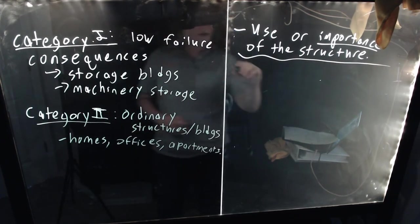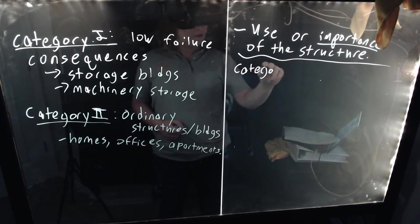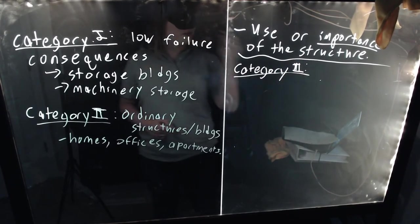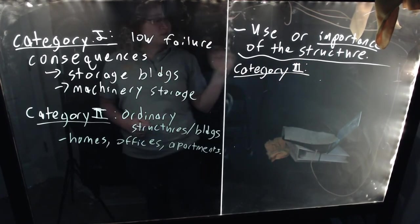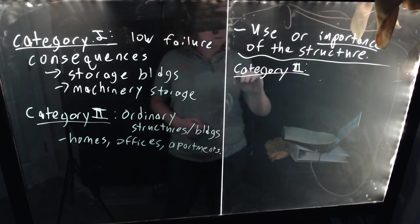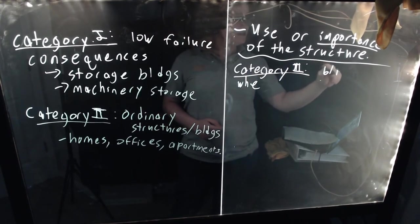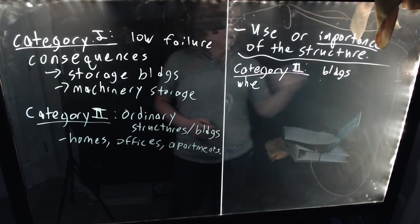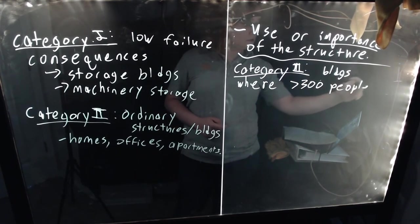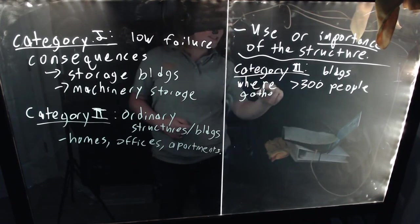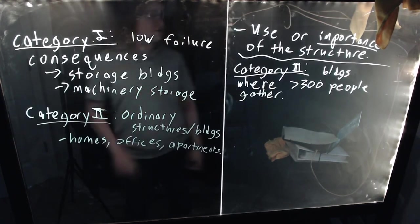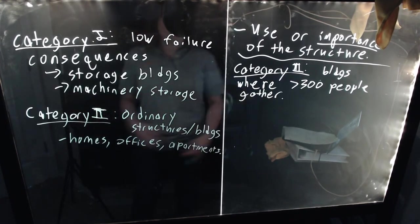Then you have Category III. These are not critical buildings for a community's survival, but they do have a high consequence of failure because typically these are buildings where large numbers of people gather. These are buildings with greater than 300 people. Think stadiums, think movie theaters, think regular theaters, think large convention spaces, think huge convention halls, things of that nature.